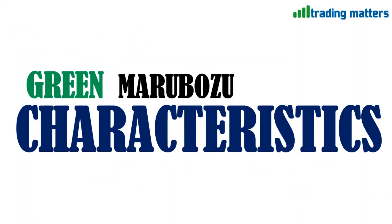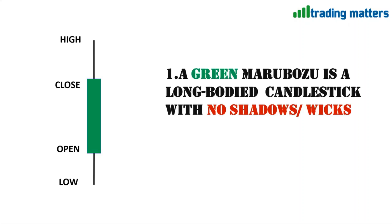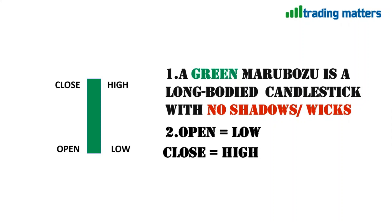In this video we are going to discuss the green Marubozu. For a normal green candle, open is at the bottom, close is at the top, high is the highest peak point, and low is the lower one. According to Marubozu's standard definition, it is a long-bodied candlestick with no shadows. When you remove the upper wick, close becomes equal to high. When you remove the lower shadow, open becomes equal to low. So a Marubozu candle is one whose open equals low and close equals high.